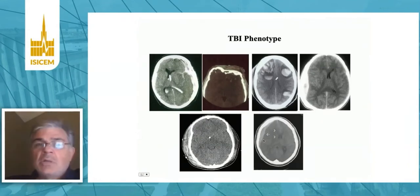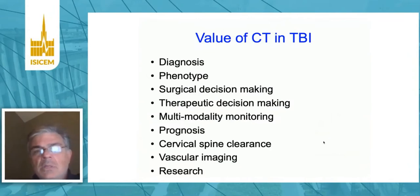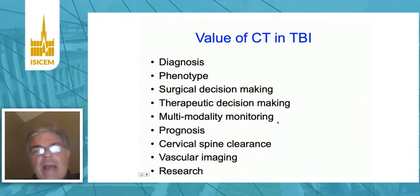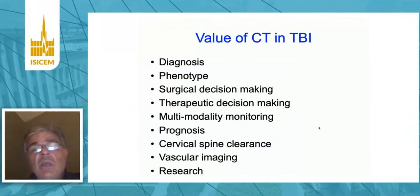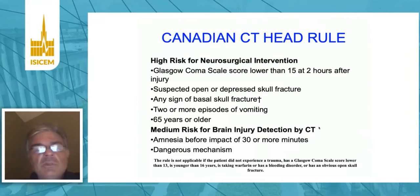There are differences in phenotypes between children and adults, yet we're going to concentrate on adults. CT in traumatic brain injury is of significant value, not only in diagnosis and phenotyping, but therapeutic decision making, whether it be medical or surgical management, guiding the value of multimodality monitoring, helping with prognostication, and importantly also clearing the cervical spine, vascular imaging, and also for research purposes.